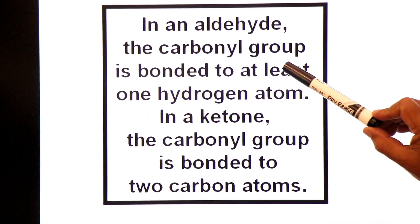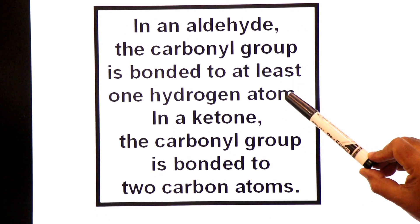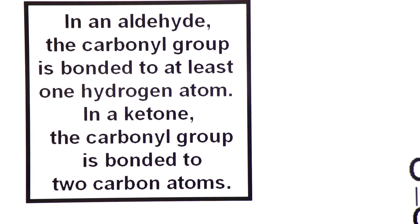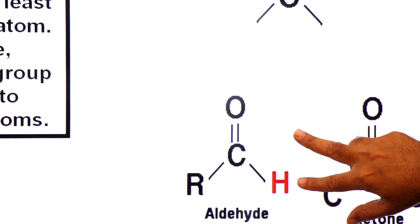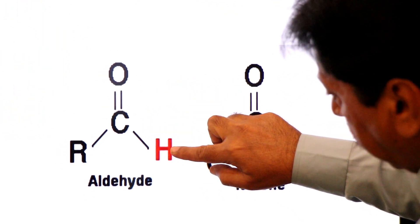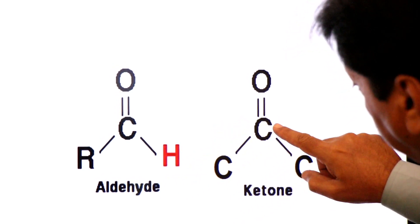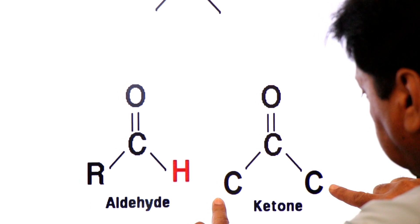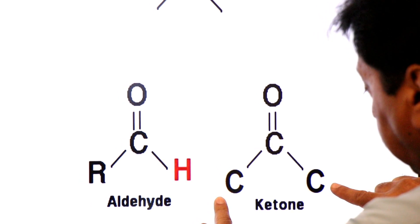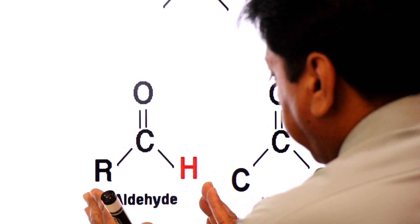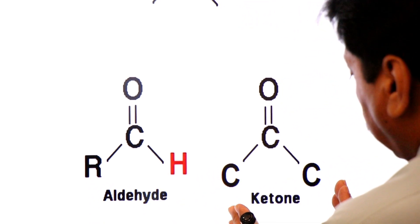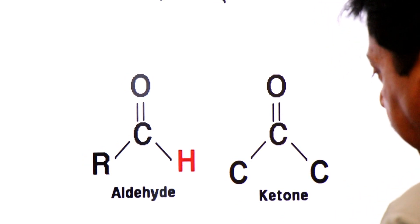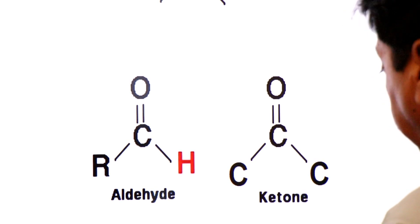In an aldehyde, the carbonyl group is bonded to at least one hydrogen atom. In a ketone, the carbonyl group is bonded to two carbon atoms. Because glucose has an aldehyde group, we call it an aldohexose; fructose has a ketone group so we call it a ketohexose.